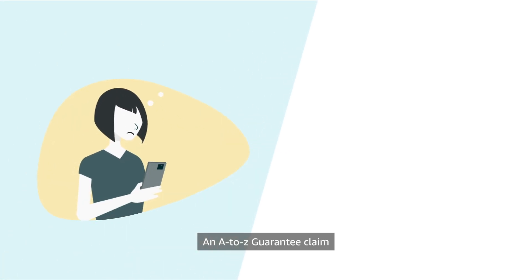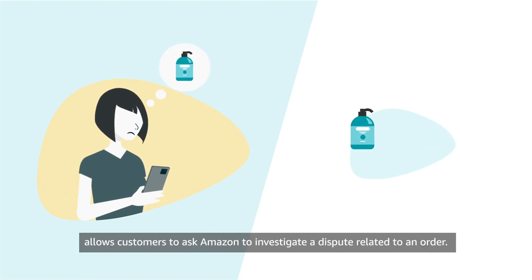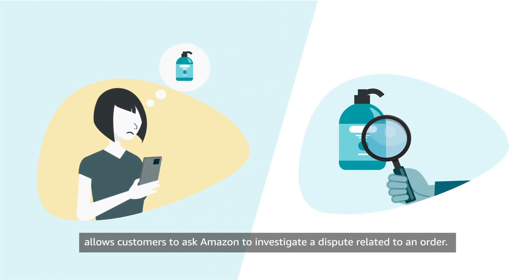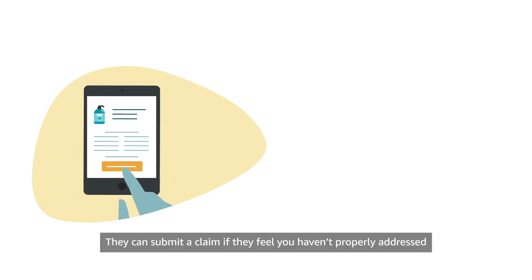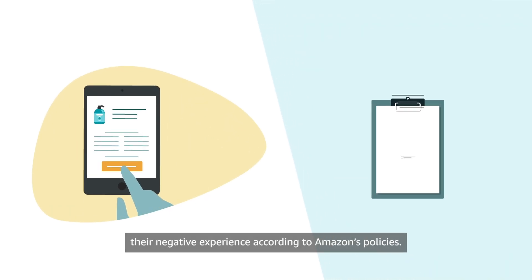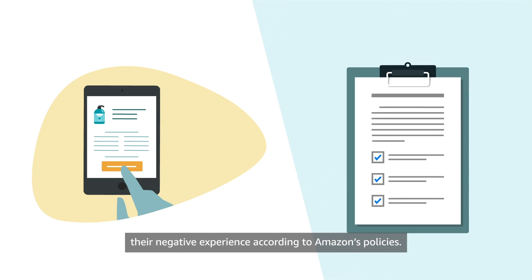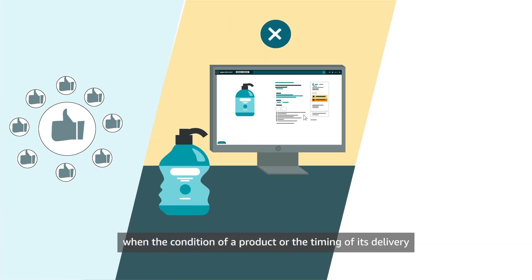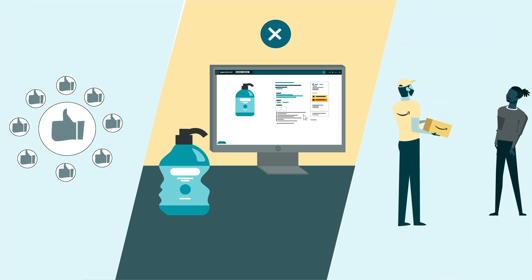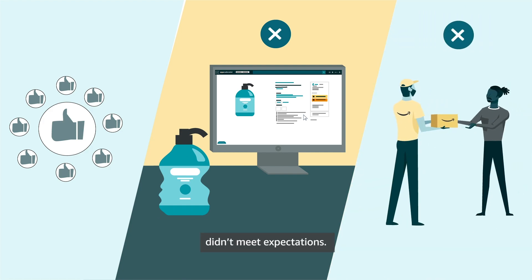An A-Z guarantee claim allows customers to ask Amazon to investigate a dispute related to an order. They can submit a claim if they feel you haven't properly addressed their negative experience according to Amazon's policies. A-Z guarantee claims help us regain valuable customer trust when the condition of a product, or the timing of its delivery, didn't meet expectations.